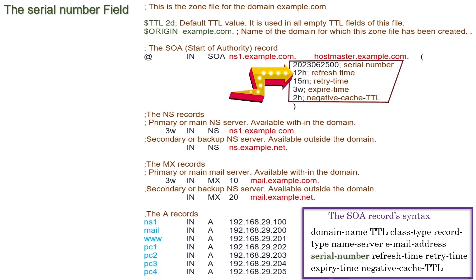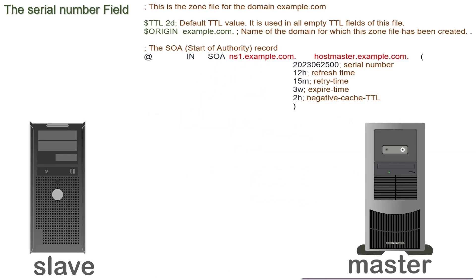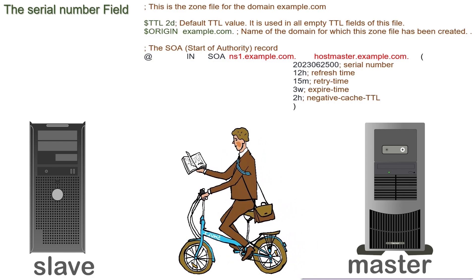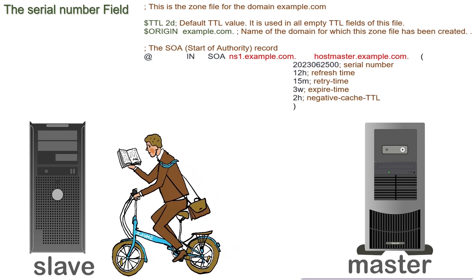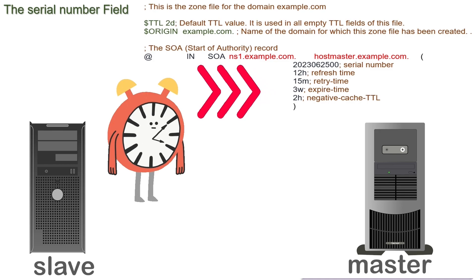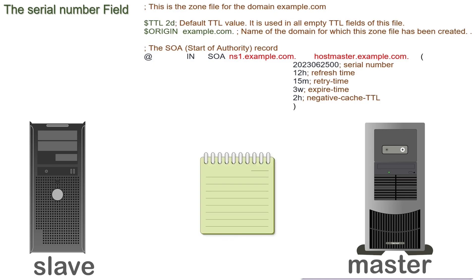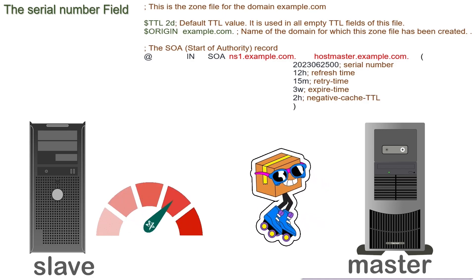These fields control the zone transfer process. A zone transfer is a process in which a master name server transfers zone files to the slave name server. In the DNS system, we can create zone files only on the master name server. The master name server automatically transfers zone files to slave name servers when it receives zone transfer requests. There are two types of zone requests: the complete zone transfer request and the Start of Authority record transfer request. The slave name server uses both types to speed up and optimize the zone transfer process.